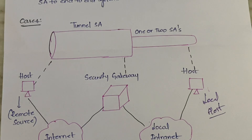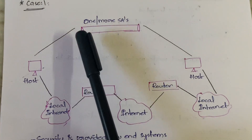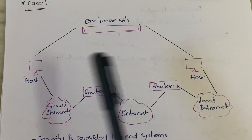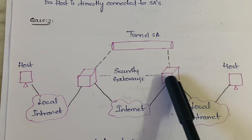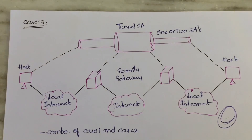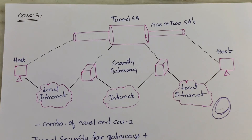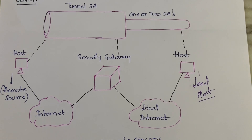So this is about the four cases in combining security associations. Case one: simple combinations providing security to the end host. Case two: tunnel used to provide security to the security gateways, and those gateways provide security to the host. Case three: a combo of both — end system security and gateway security. Case four: used mainly in the case of remote sensors.